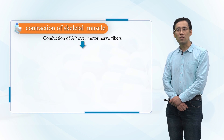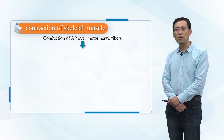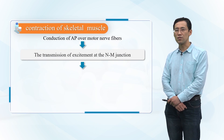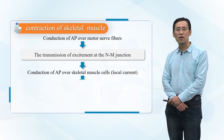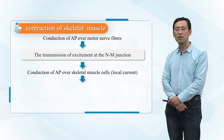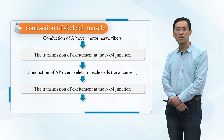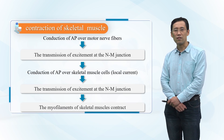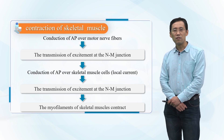The steps include: the conduction of action potential over motor nerve fibers, the transmission of excitement at the neuromuscular junction, the conduction of action potential over skeletal muscle cells via local current, and the contraction of myofilaments of skeletal muscle.